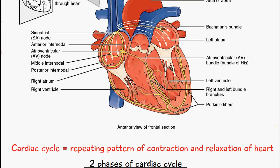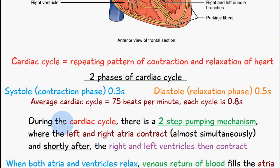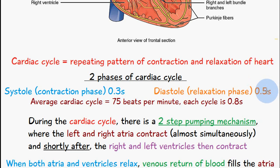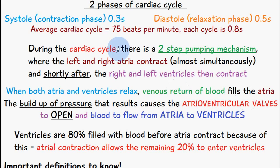The cardiac cycle is a repeating pattern of contraction and relaxation of the heart. There are two phases: systole, which is the contraction phase and lasts 0.3 seconds, and diastole, which is the relaxation phase and lasts 0.5 seconds. Each cardiac cycle is therefore 0.8 seconds long, and the average cardiac cycle gives 75 beats per minute — that's the average heart rate.